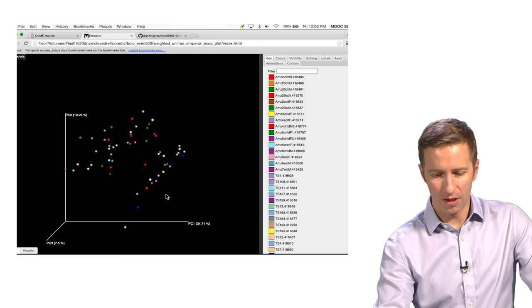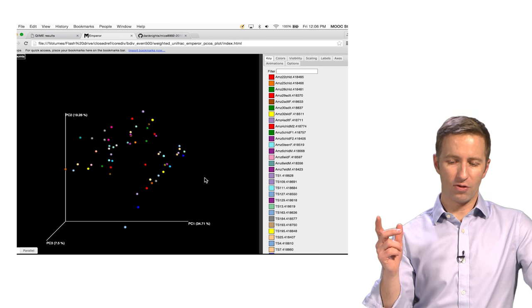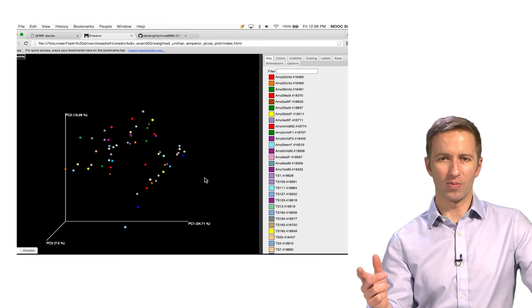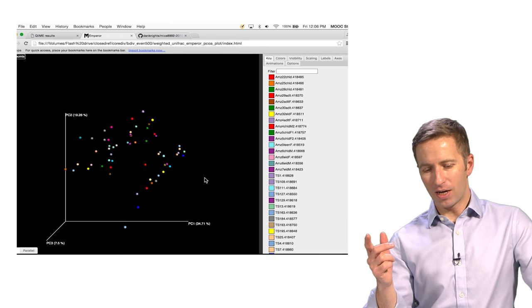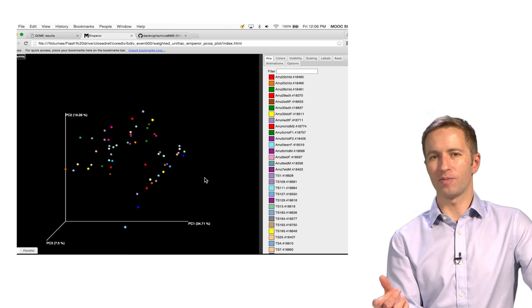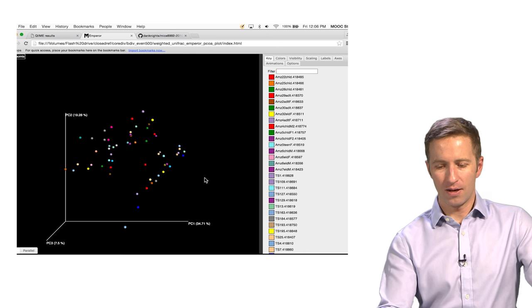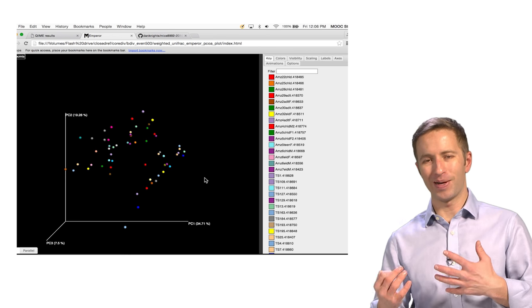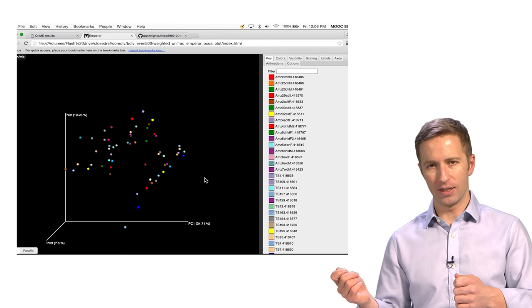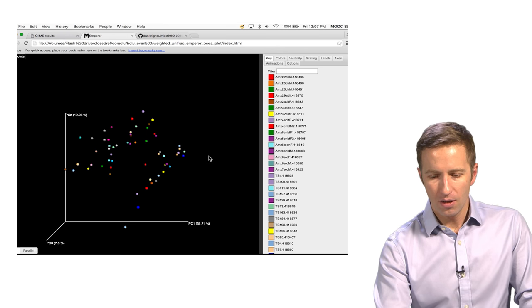you get this nice 3D plot. Here it's actually showing you the first three dimensions of principal coordinates analysis. Now I'm not going to go into details about how principal coordinates analysis works. We'll be doing that later on in the course.